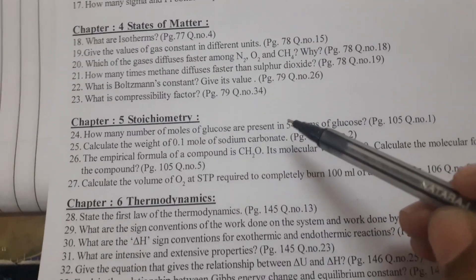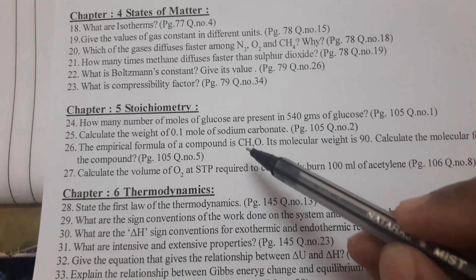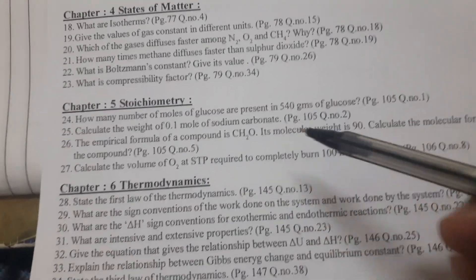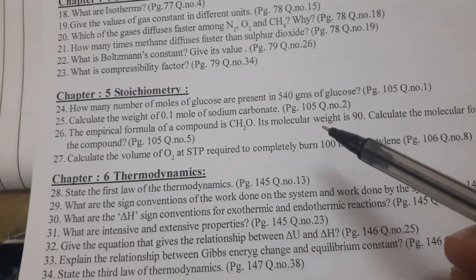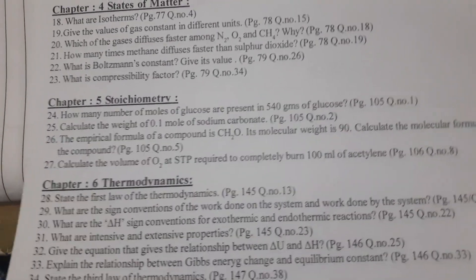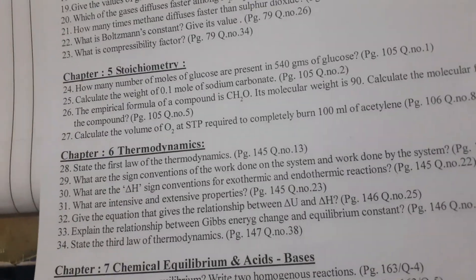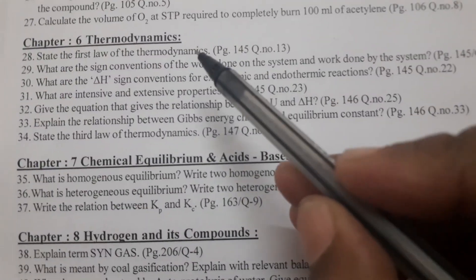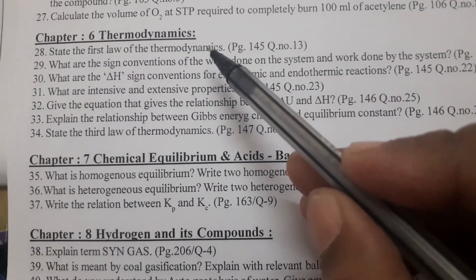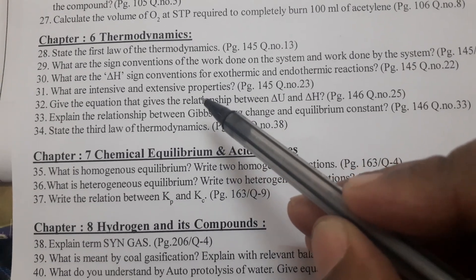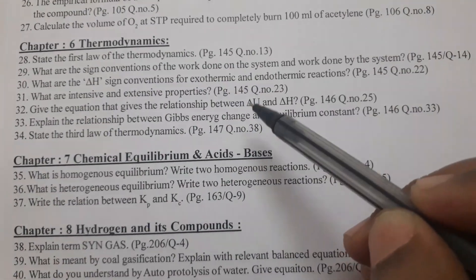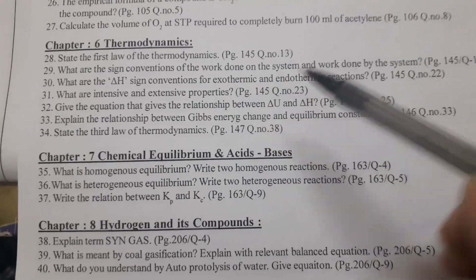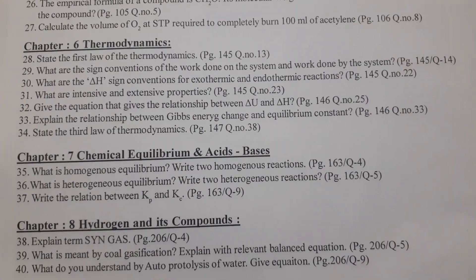Chapter 5 — stoichiometry: 4 VSAQs are given. Chapter 6 — thermodynamics, an important chapter: 7 VSAQs are given.